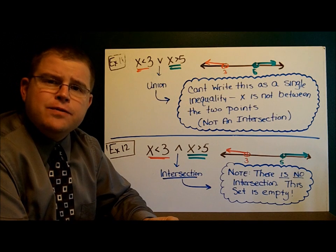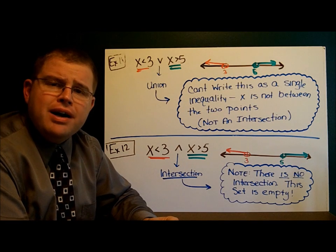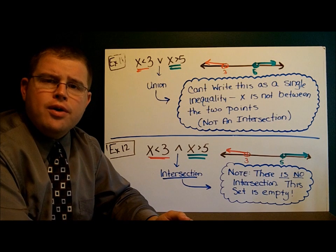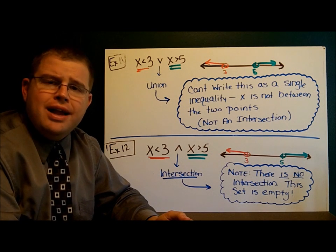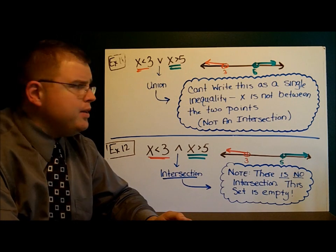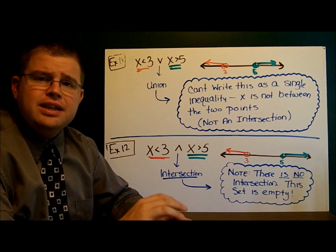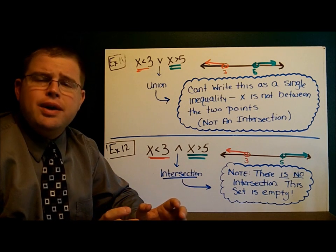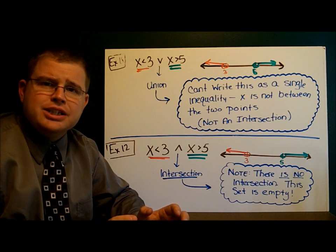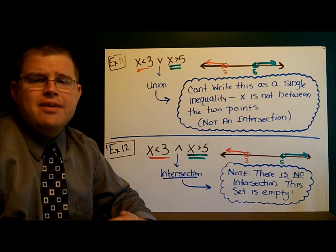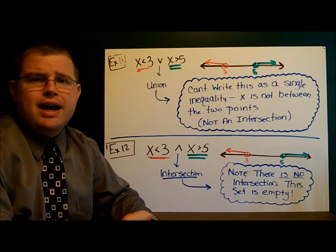The next page has four examples. I'd like for you to pause the video here and give those a try. There are four number lines — see if you can write the set using the simplified notation if it's an intersection, and if it's a union, just write it how we always have.